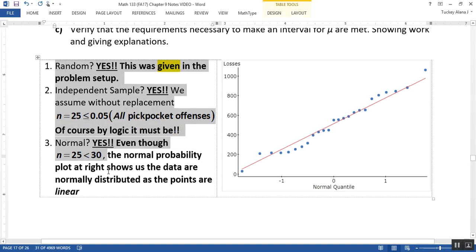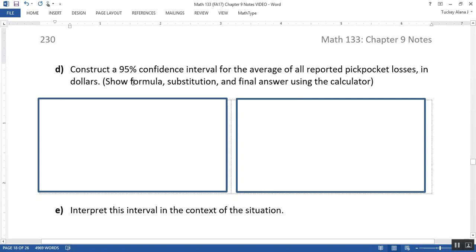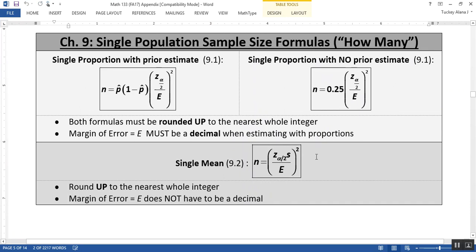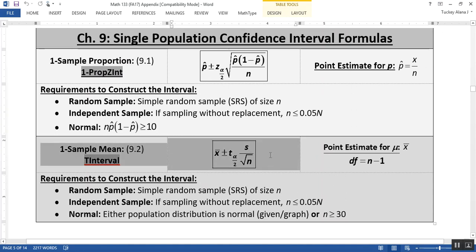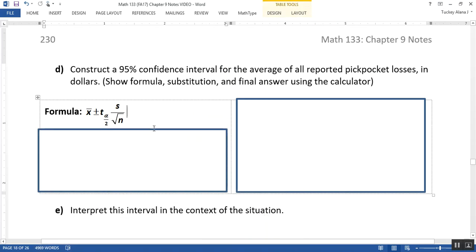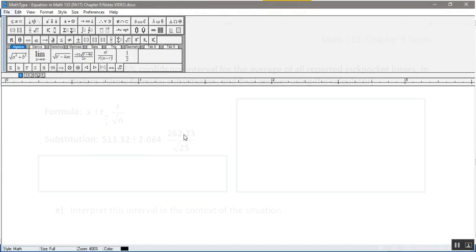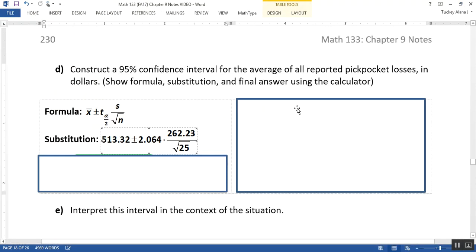All right, now that we know that it's okay to make a confidence interval, let's go ahead and do it. So we're going to construct a 95% confidence interval for the average of all reported pickpocket losses in dollars. And we're going to show the formula, the substitution, and the final result in order to earn full credit. Well, the formula part's easy. Right? The formula part is the part that comes right out of your appendix. What's interesting about it is when you take your exam, you have five formulas on this page, the three down here and the two up here. So by writing the formula down correctly as the one for a confidence interval for a mean, I should say, you're proving to me you know which formula to use when. And there's going to be more formulas, by the way, in Chapter 11 coming as well. So then I have to substitute. But I know that x-bar is 513.32. I found it up above. And I know that s is 262.23 and n is 25. So that part's all easy. The hard part is this 2.064, right?